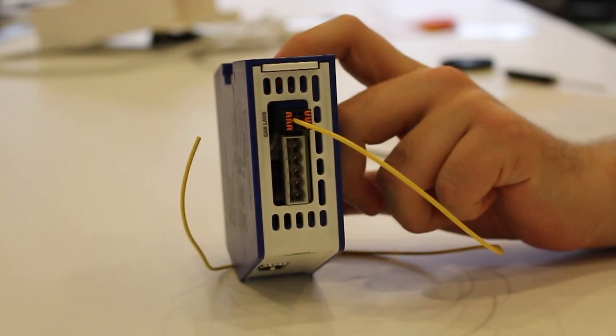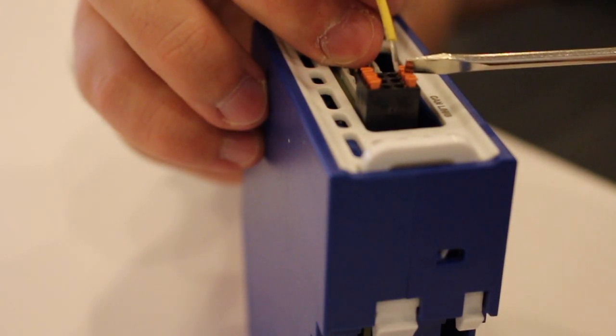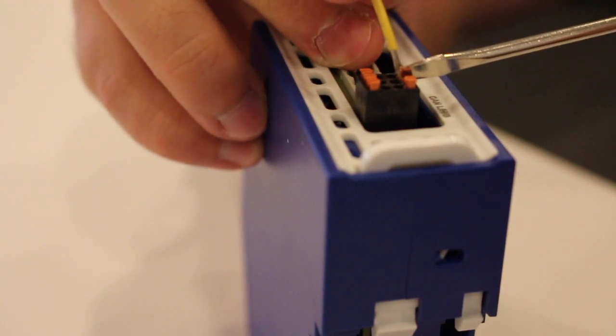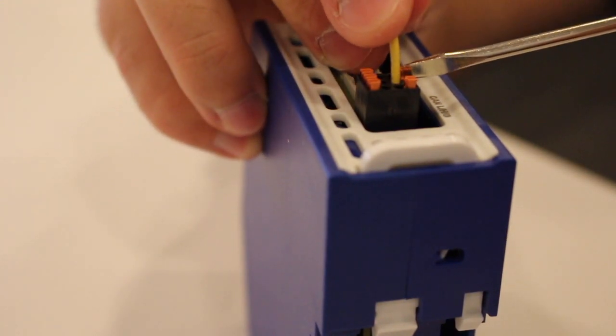To install the wire, push down on the orange spring pin, insert the wire, and then release the pin to secure the wire.